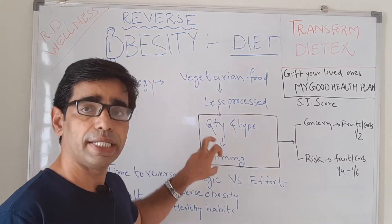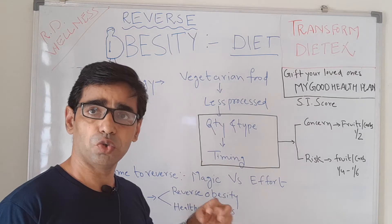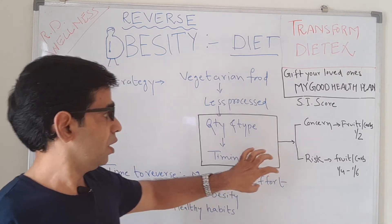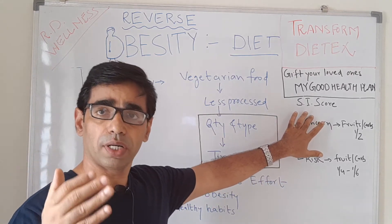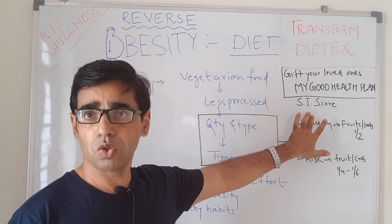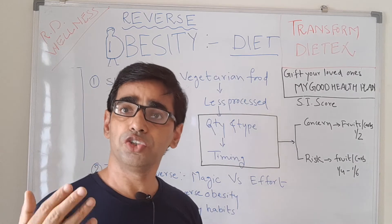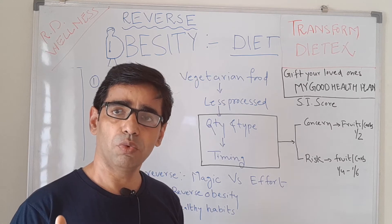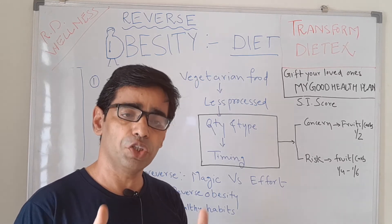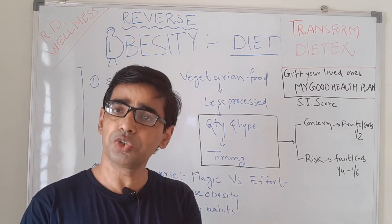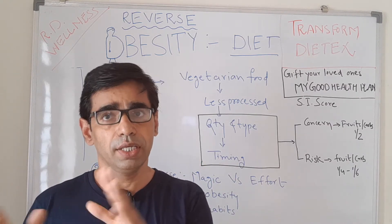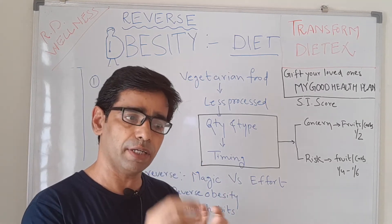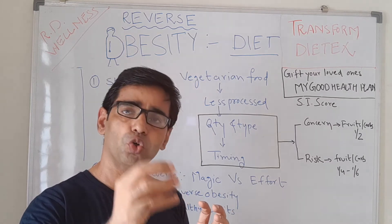These two things — the quantity and type of food, and timing — are not the same for everybody. That depends upon the SI score. We encourage you to go back to our SI score concept video and find out what your SI score is. Once you know your SI score, you will know whether you are in the healthy zone, the concern zone, or the risk zone, and you can see which points you need to control.